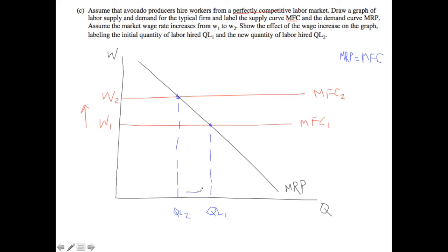So what that shows us is a clear leftward shift. As a result of the wage increase, the quantity of labor that is hired goes down. And that intuitively makes sense.